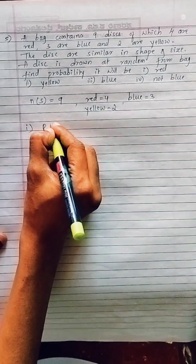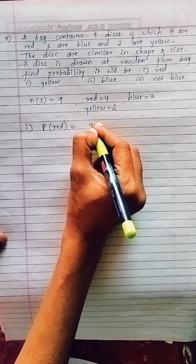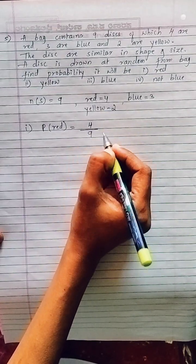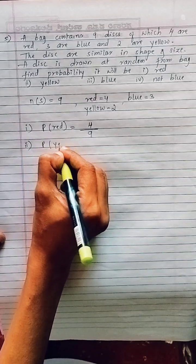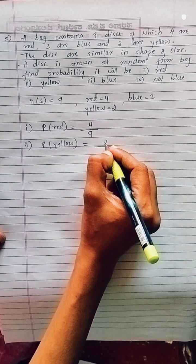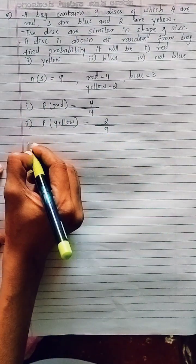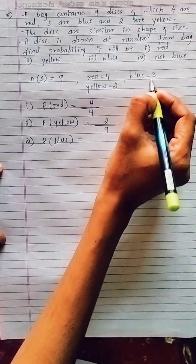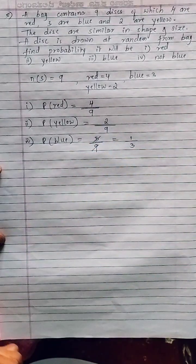P(red) = number of red discs / total = 4/9. P(yellow) = 2/9, since there are 2 yellow discs out of 9 total. P(blue) = 3/9 = 1/3, since there are 3 blue discs and 3/9 simplifies to 1/3.